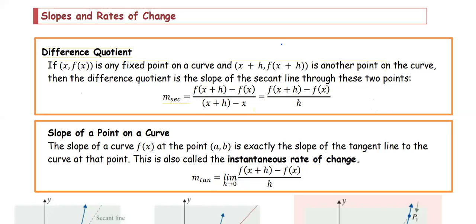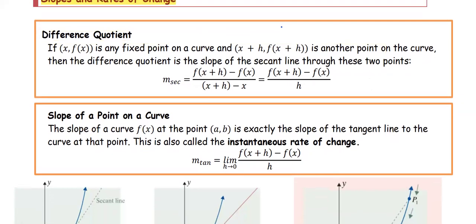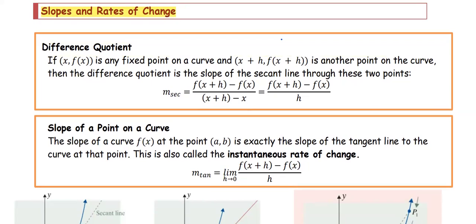In this section, we are going to talk about slopes and rates of change. Another form of the slope we call the difference quotient. By definition, if the ordered pair x comma f(x) is any fixed point on the curve, and the coordinate x plus h comma f(x+h) is another point on the curve, then the difference quotient is the slope of the secant line through these two points.